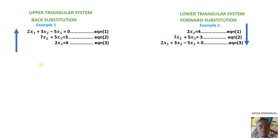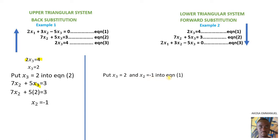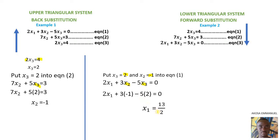Let's solve example 1. From equation 3, we have 2S3 equal to 4. To find S3, we divide both sides by 2, giving S3 equal to 2. We put S3 equal to 2 into equation 2 to find S2. Wherever we see S3, we put 2 there, and we get S2 equal to negative 1. Then we put S3 equal to 2 and S2 equal to negative 1 into equation 1 to find S1. Wherever we see S2, we put negative 1, and wherever we see S3, we put 2, giving S1 equal to 13 over 2.